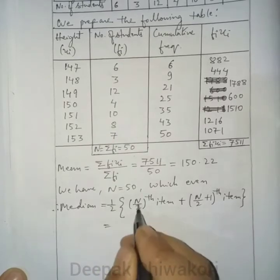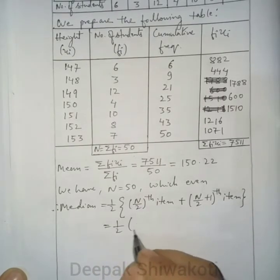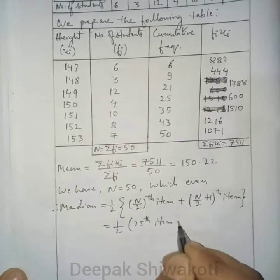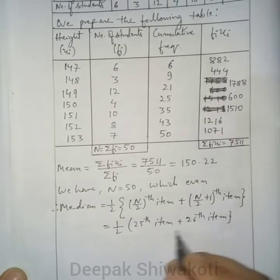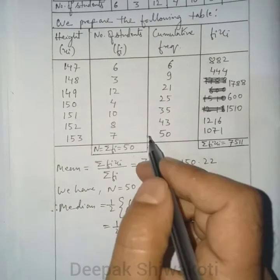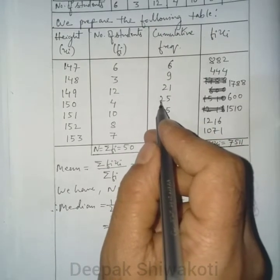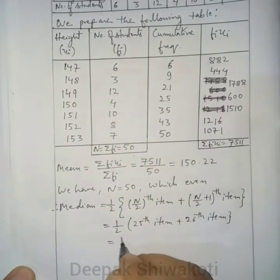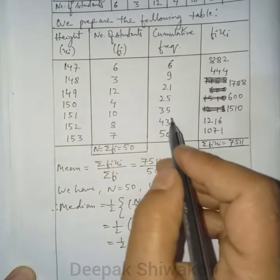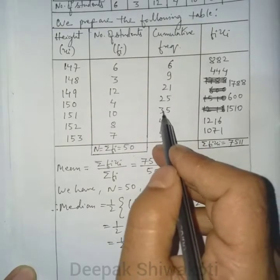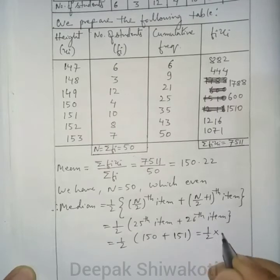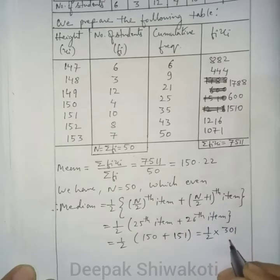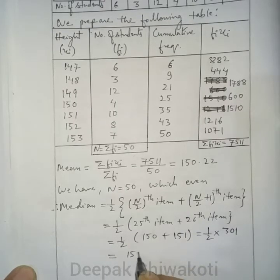Here n = 50, so we need the 25th and 26th items. From the cumulative frequency table, the value of the 25th item is 150, and the 26th item falls between cumulative frequencies 25 and 35, so its value is 151. Median = ½ × (150 + 151) = ½ × 301 = 150.5.